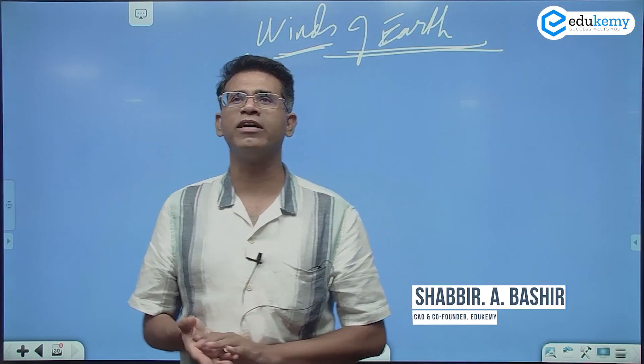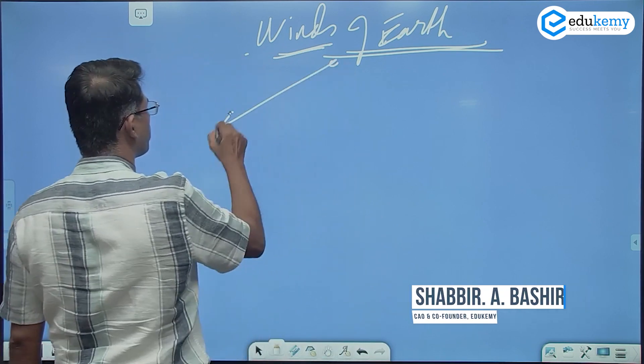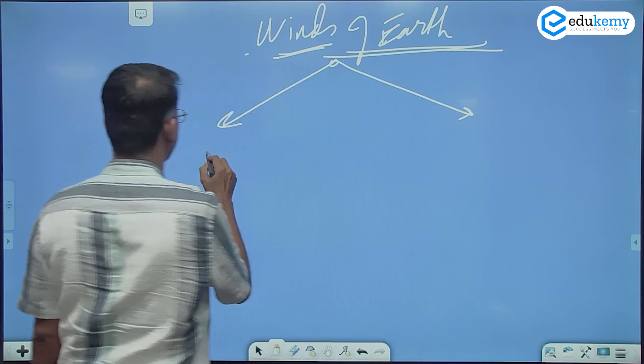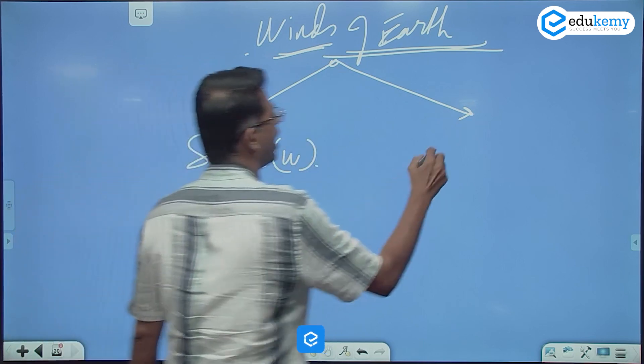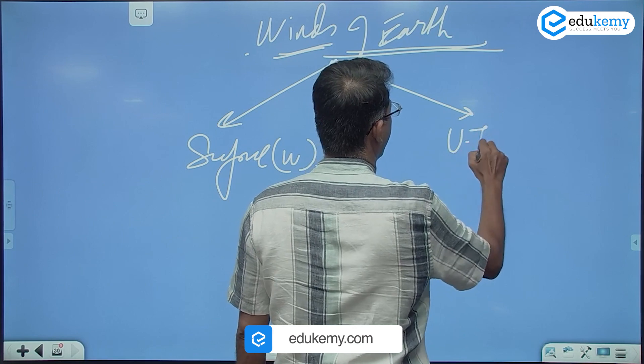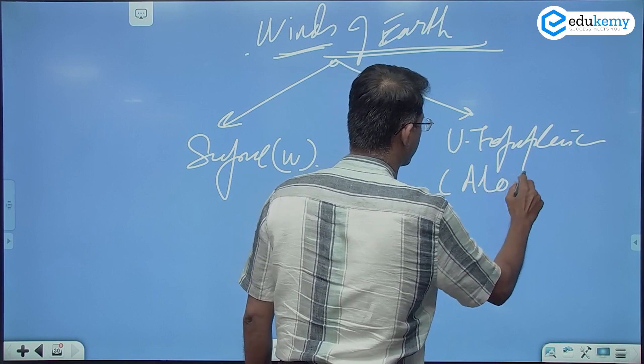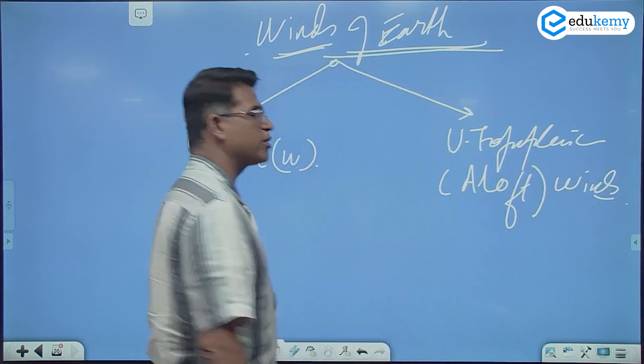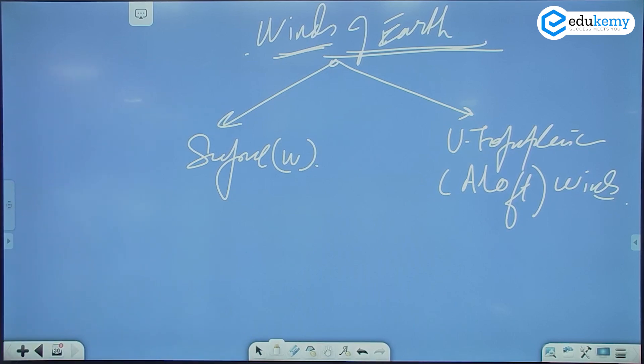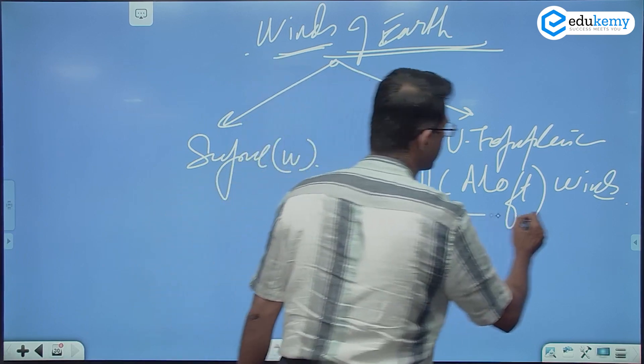The winds of earth. Winds may again, we have surface winds and we have upper tropospheric, some books can write aloft, aloft winds. Surface winds and aloft winds, aloft winds based on the pressure patterns we have discussed.